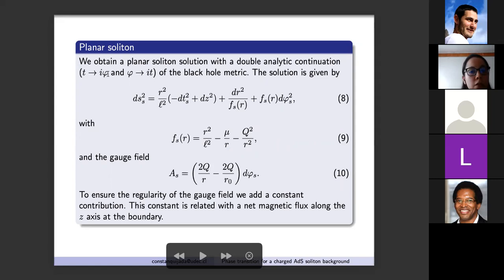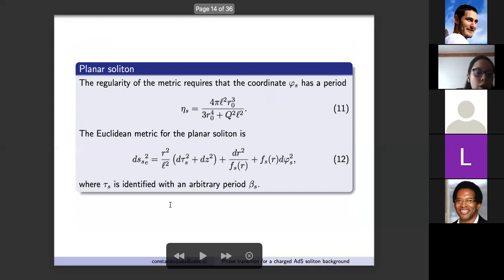We can obtain another solution to the theory with a double analytic continuation of the black hole metric in the coordinates t and phi. This solution is a planar soliton which is different from the black hole solution. Its line element is given by expression eight with the function f_s defined by equation nine where mu and capital Q are integration constants. The gauge field is in equation ten where r_0 is the largest root of the equation f_s equal to zero.